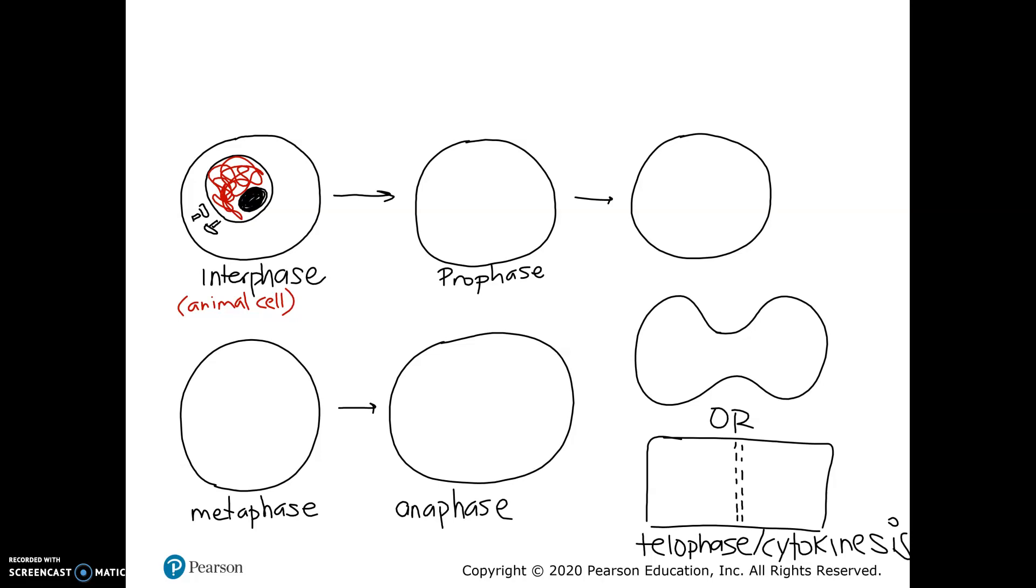But horses have a different number. Fruit flies have like eight. Some species of corn, I think, have over 300 chromosomes. So depending on the species, the number of chromosomes is going to differ.